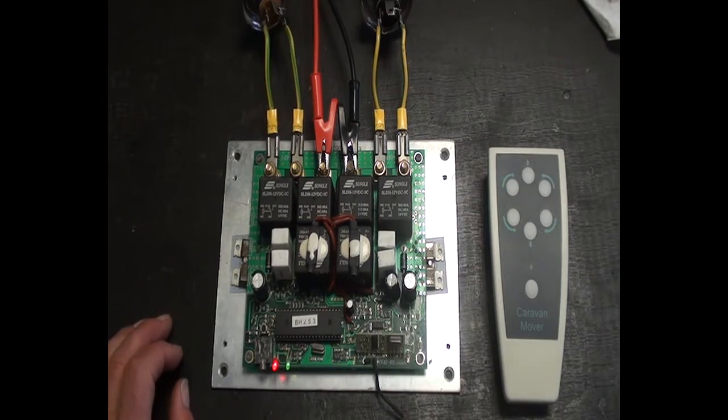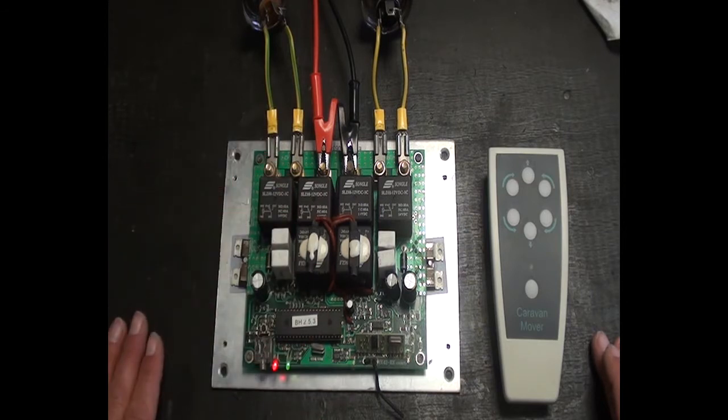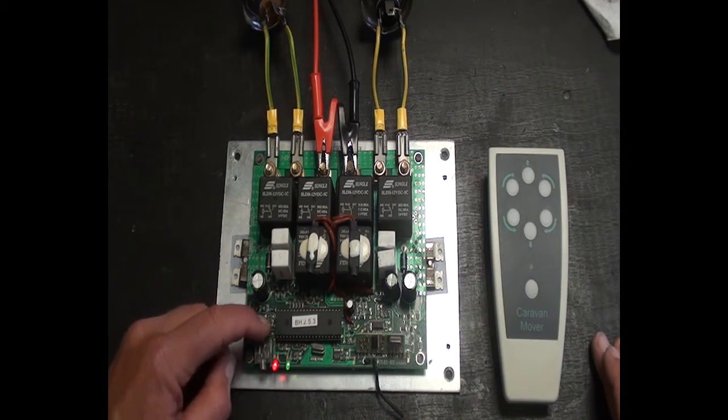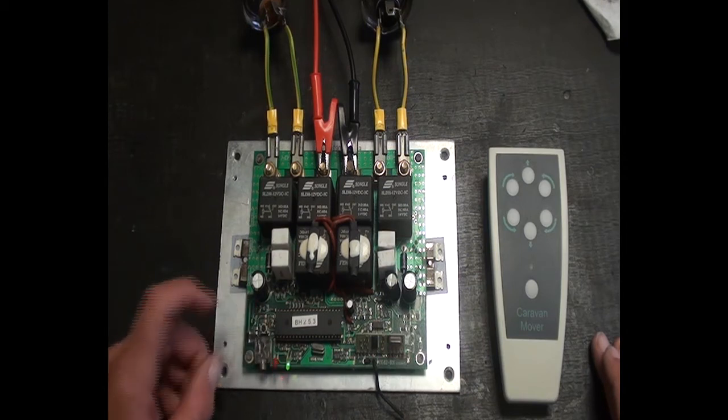The final stage is to synchronise the relay controller with the handset. So we ensure that the relay controller board is powered up. We locate the reset button, we depress the reset button and the LED starts to flash on the relay control board.